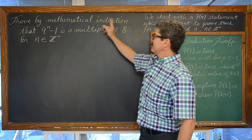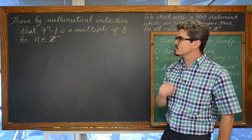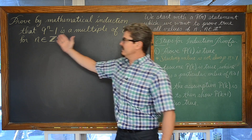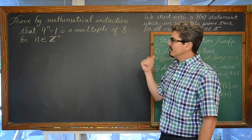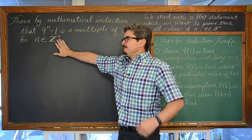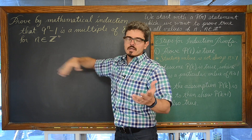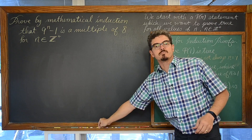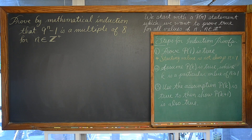We are going to prove by mathematical induction that 9 to the n power minus 1 is a multiple of 8, for all n such that n is in the set of positive integers. This double-z notation is a symbol for positive integers that the textbook I am teaching from uses.